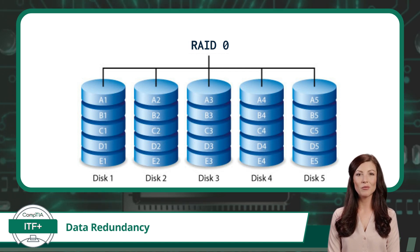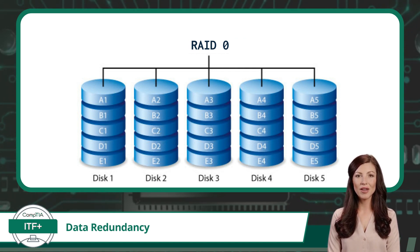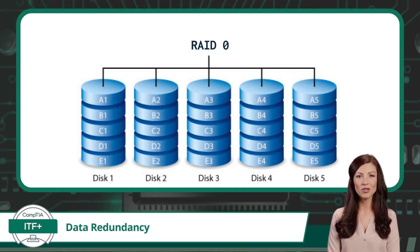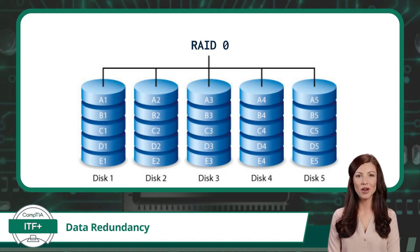If you are following along with the image behind me, each blue cylindrical column represents a hard drive. Each letter, A through E, represents a block of data. And the numbers, 1 through 5, are used to represent the sequential order in which the divided parts of a block of data are written to the drive array.